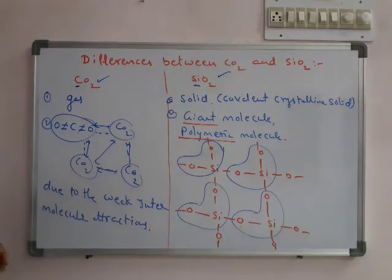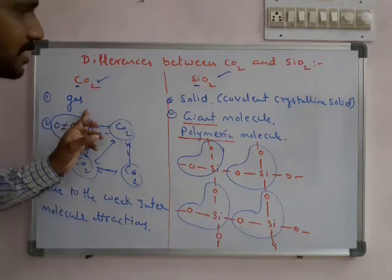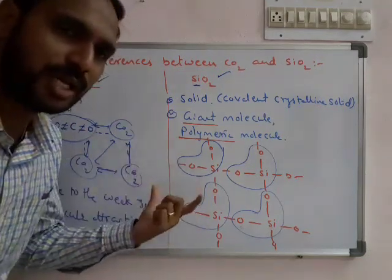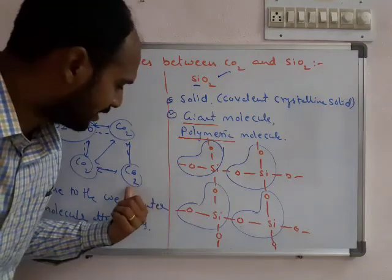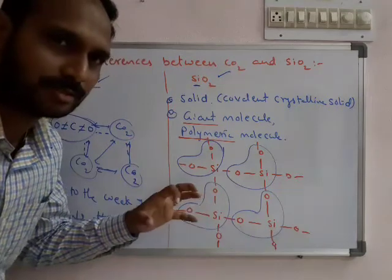This is the main difference between CO2 and SiO2. CO2 is gaseous form, SiO2 is solid form. Due to the difference in the structures - it is a single molecule structure versus a giant molecule structure.